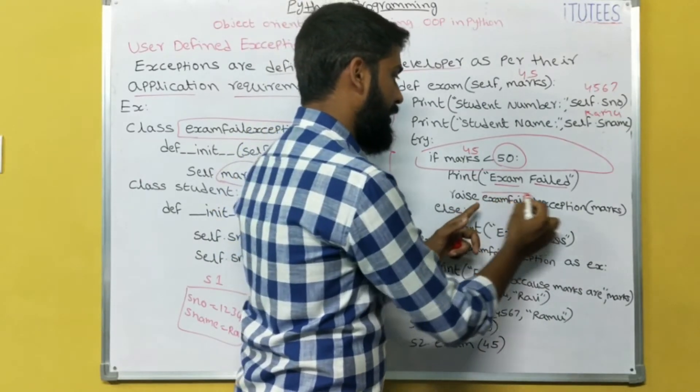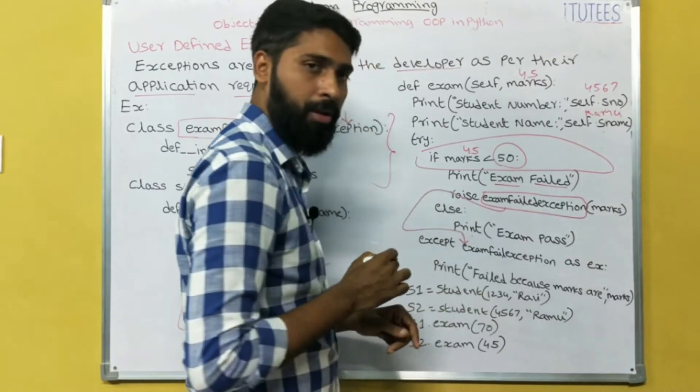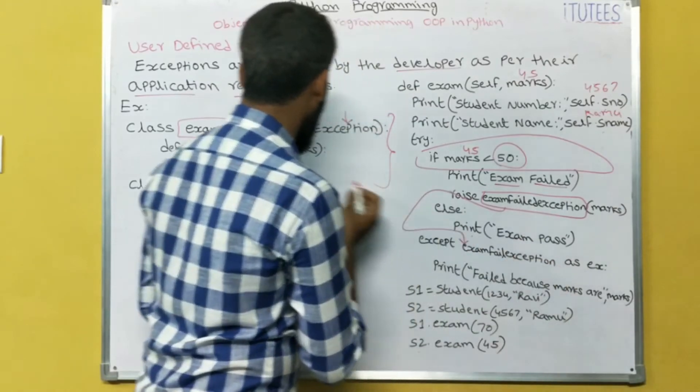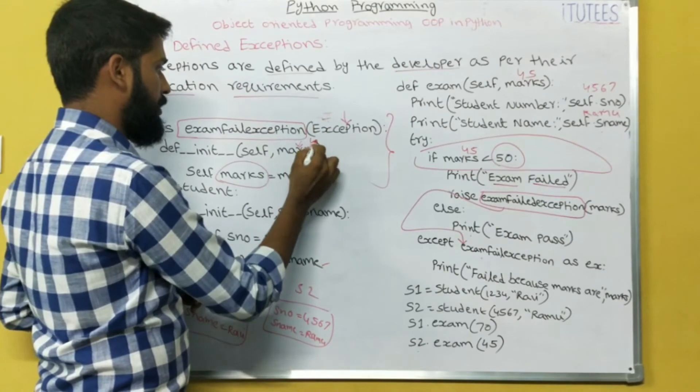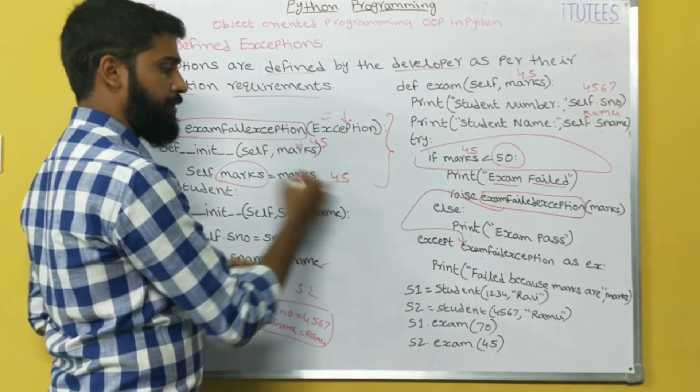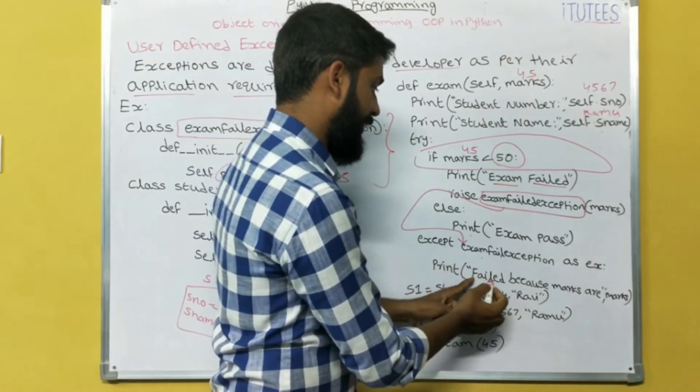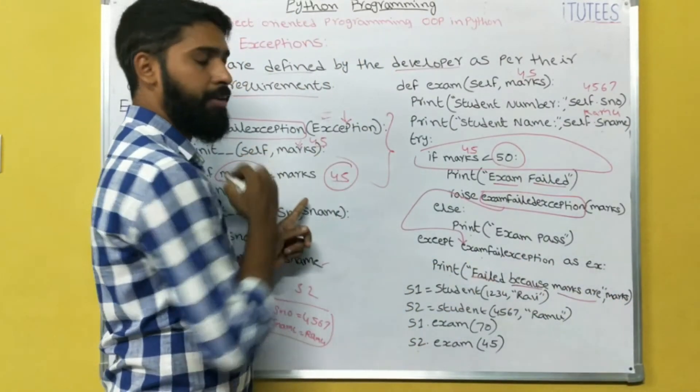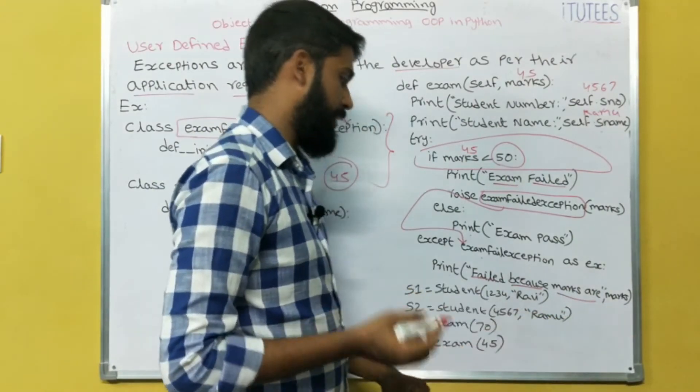Exam fail exception. Then control goes to here, exception block. Exam fail exception as EX - that means this is the predefined class. The marks are 45. self.marks equals to 45. Now we are going to print failed because marks are - what is the marks value? 45. Failed because marks are 45 prints.